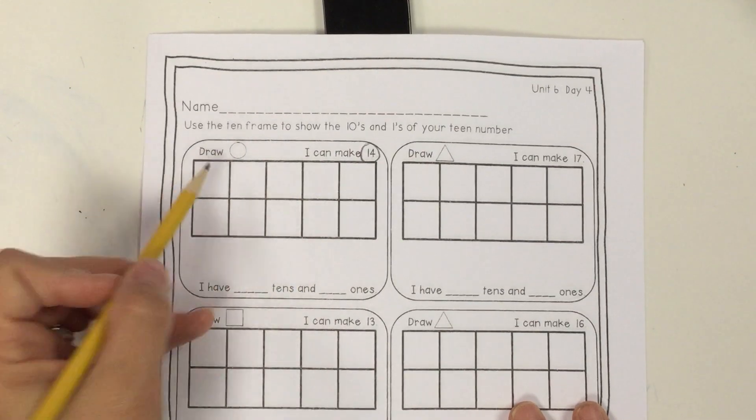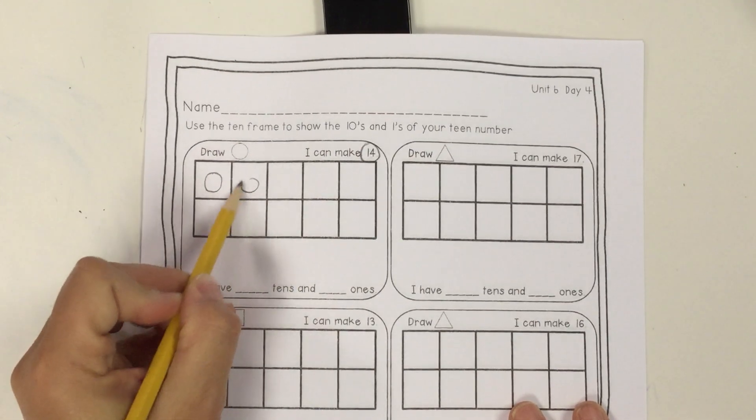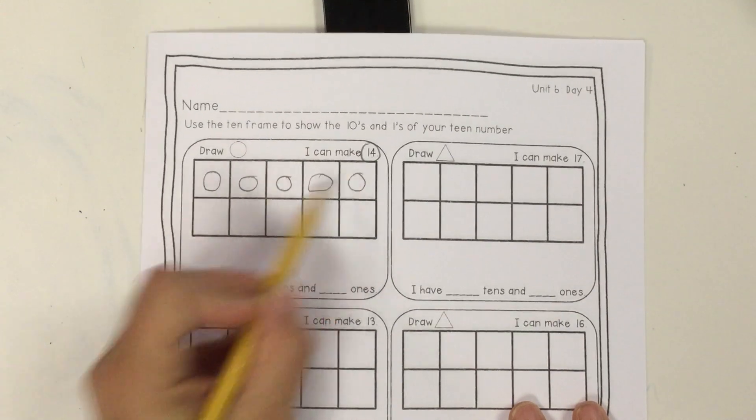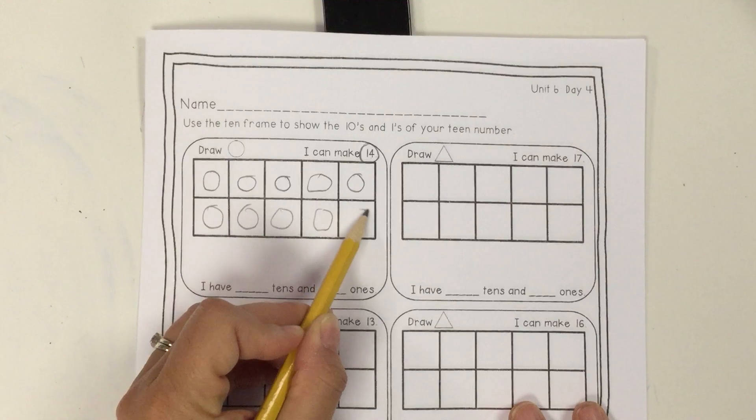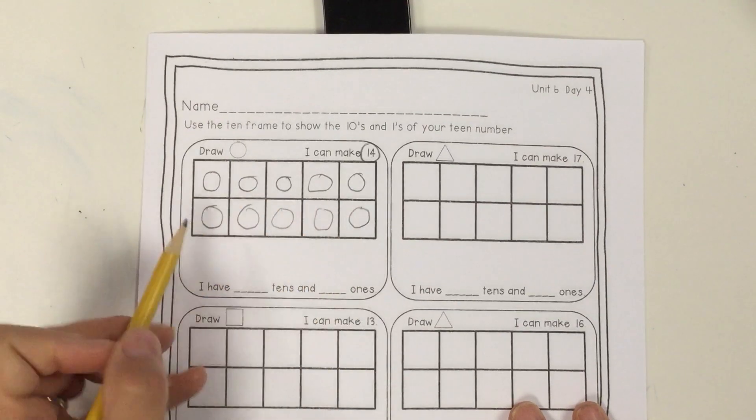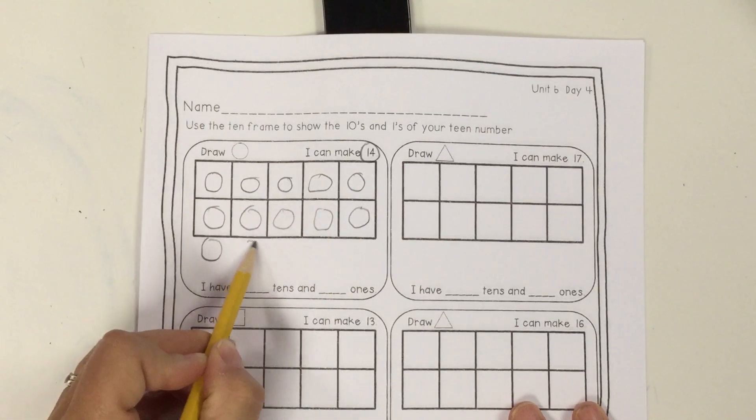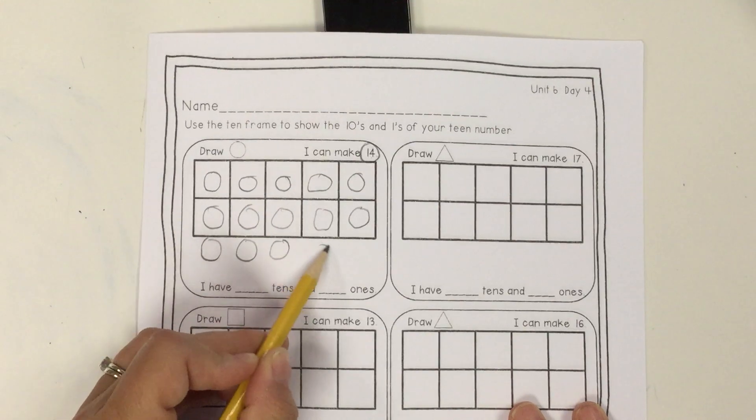So I'm going to use my 10 frame. 1, 2, 3, 4, 5, 6, 7, 8, 9, 10. I ran out of space, so I'm going to keep on going. 11, 12, 13, 14.